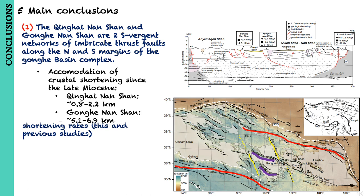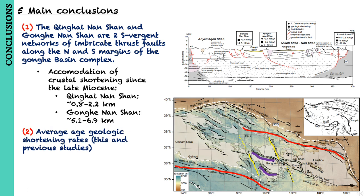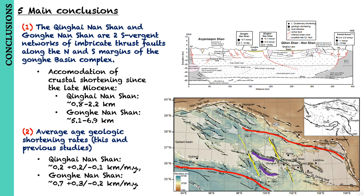When integrated with previous stratigraphic studies, average geologic shortening rates across the Qinghai-Nanshan are 0.2 plus 0.2 minus 0.1 km per million years, and rates across the Gonghe-Nanshan are around 0.7 plus 0.3 minus 0.2 km per million year.